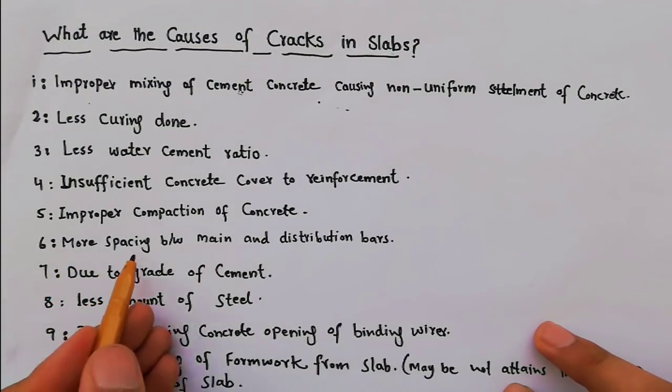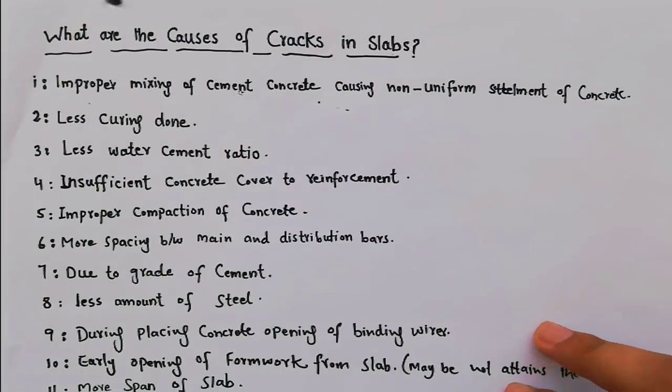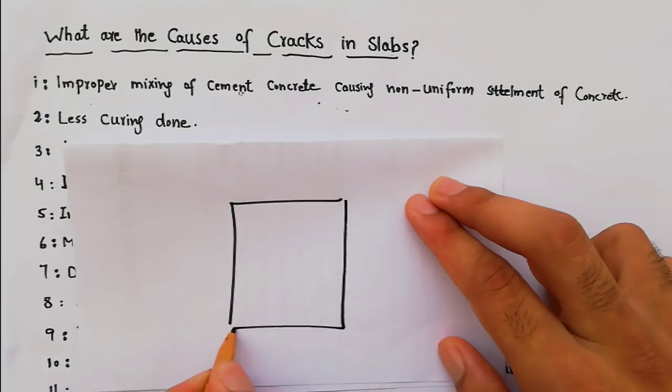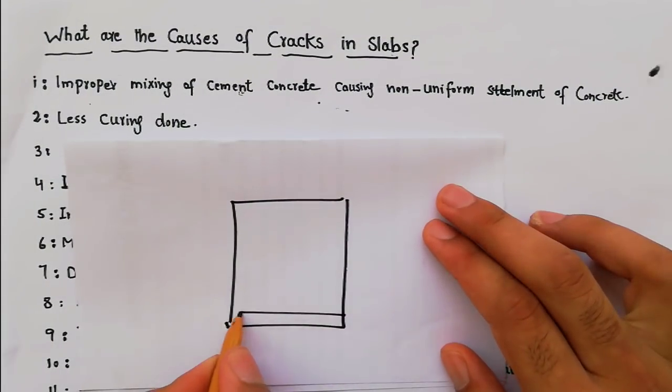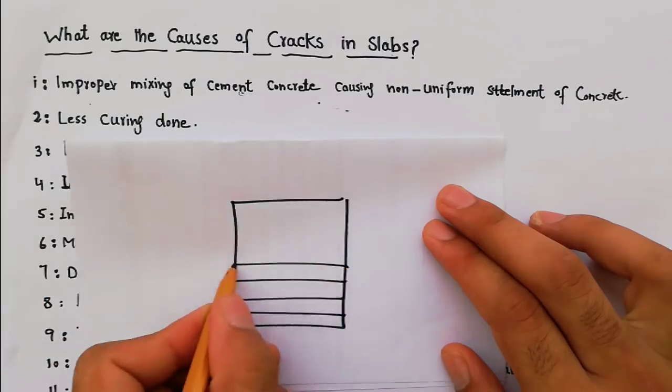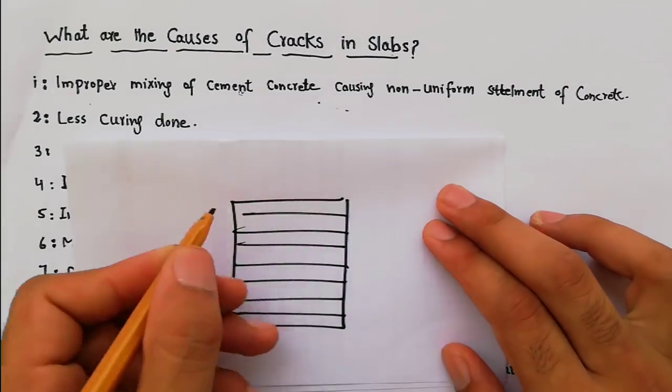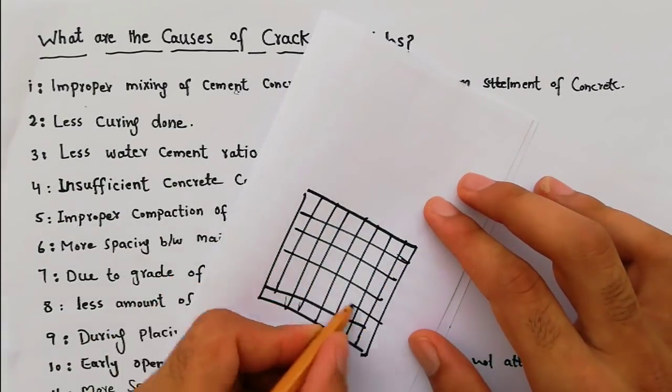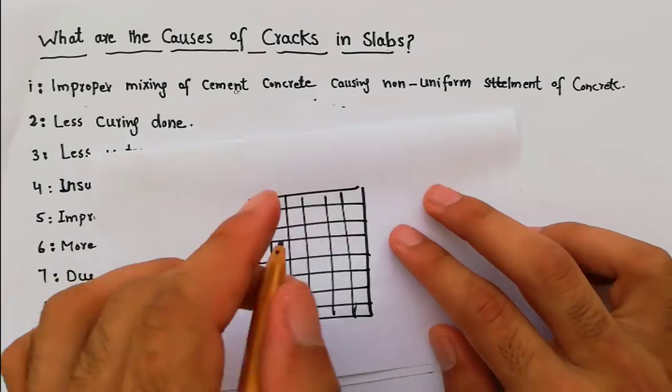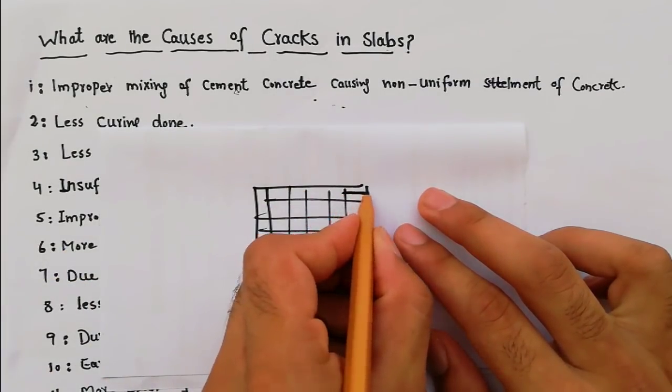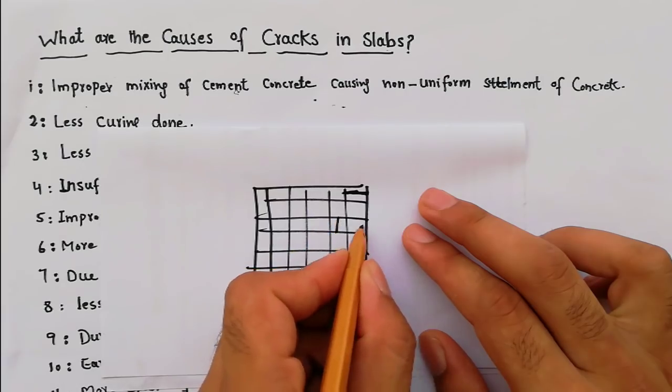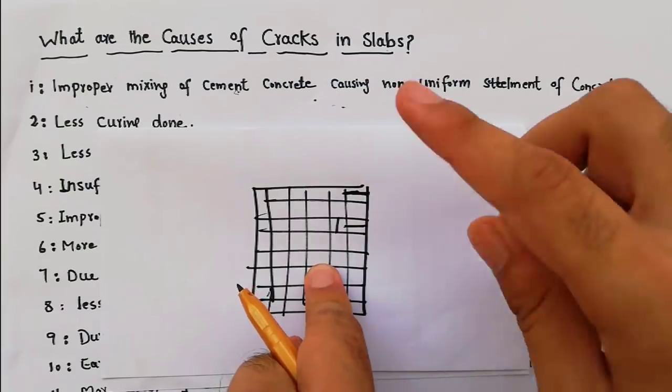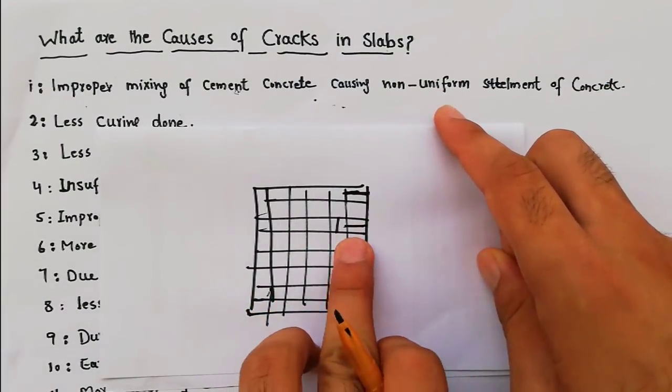Sixth one, more spacing between main and distribution bars. Suppose this is a slab. These are main bars and these are distribution bars. Between main bars and distribution bars, this spacing should not be more. It should be according to design for the slab. Without the design, if we keep more spacing,